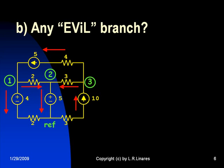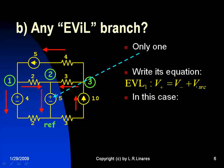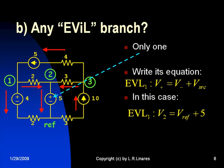Is there any evil branch in this circuit? Yes, it is. Only one, this one. Let's write an equation for that evil branch. The voltage of the positive node is higher than the voltage of the negative node by 5 volts. In this case, V2 is V of the reference, 0 volts plus 5. In short, V2 is 5 volts.